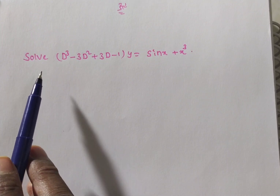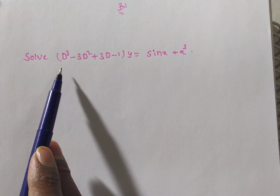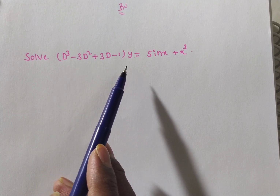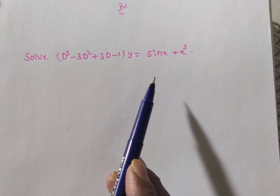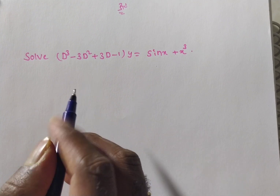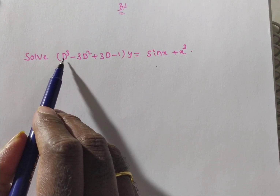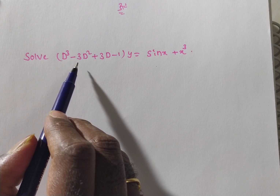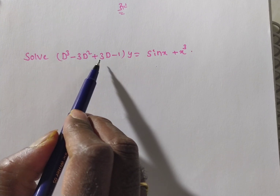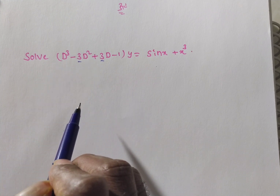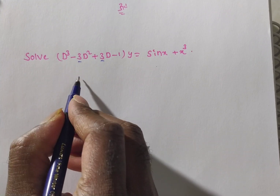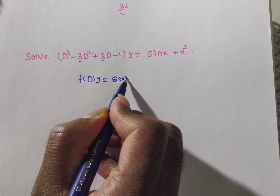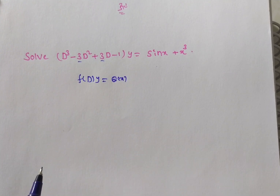The given problem is: solve (D³ - 3D² + 3D - 1)y = sin x + x³. We observe the order of the derivative is 3, so this problem belongs to a higher-order linear differential equation with constant coefficients. It is in the form f(D)·y = Q(x).